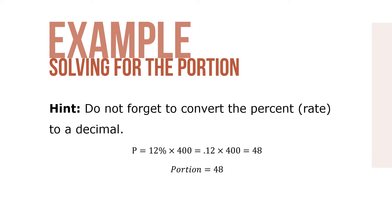Don't forget to convert the percent, the rate, to a decimal. So P equals 12% times 400 is really .12 times 400, which means our portion is 48.